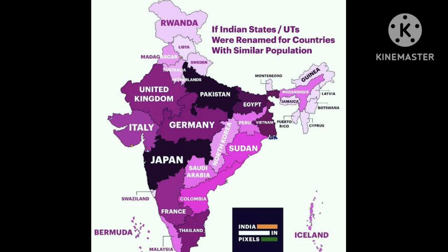Arunachal Pradesh and Ladakh are like Rwanda and Guinea, which are tiny populations. Delhi is the most shocking — with the population of the whole of Netherlands, but it's just super tiny. Pakistan's population can fit in Uttar Pradesh, Japan's population can fit in Maharashtra. UK and Germany match with MP and Gujarat, Italy with Tamil Nadu, Thailand with Karnataka, and France with Karnataka. Have a look at this map.